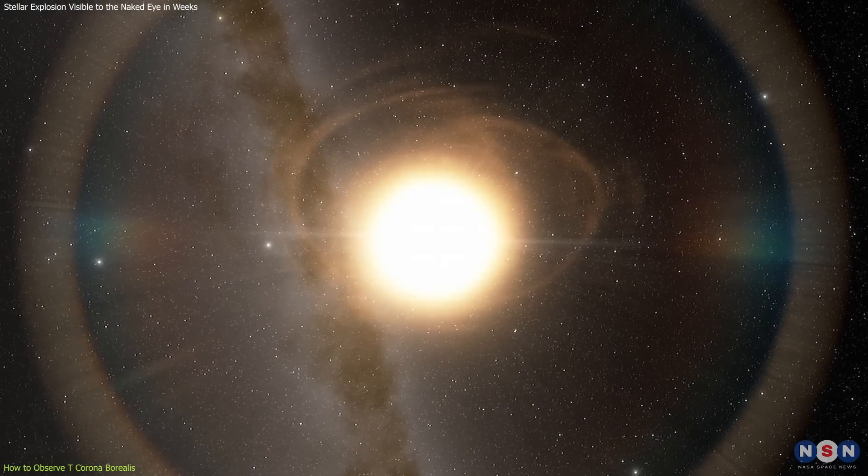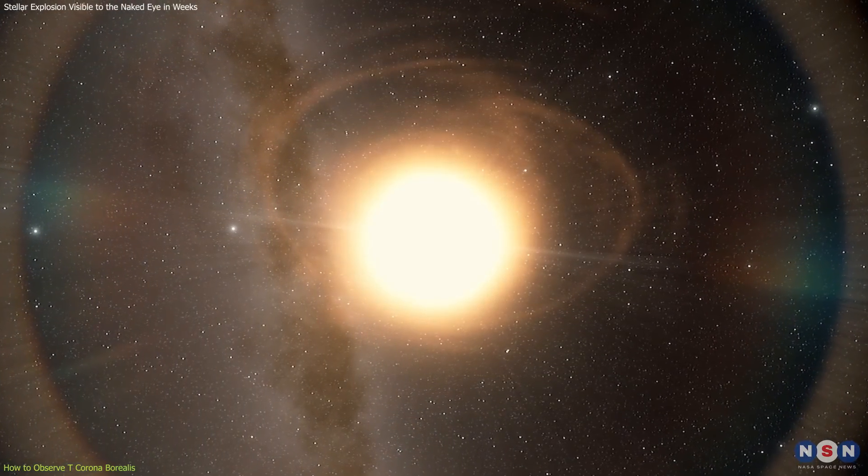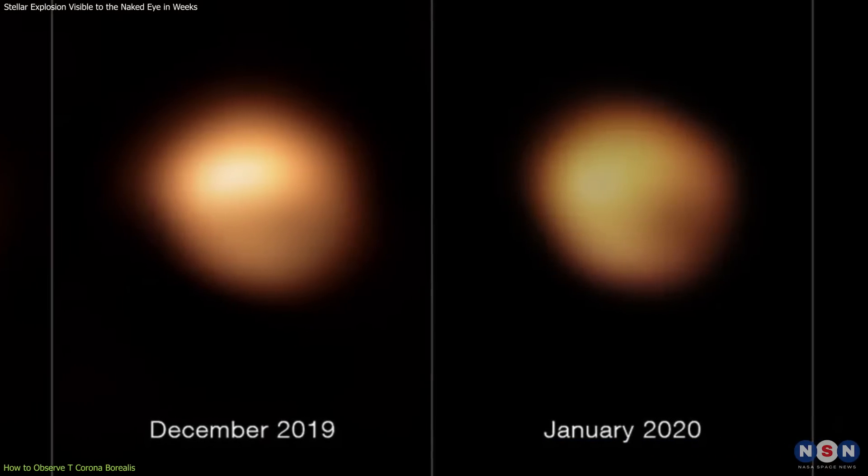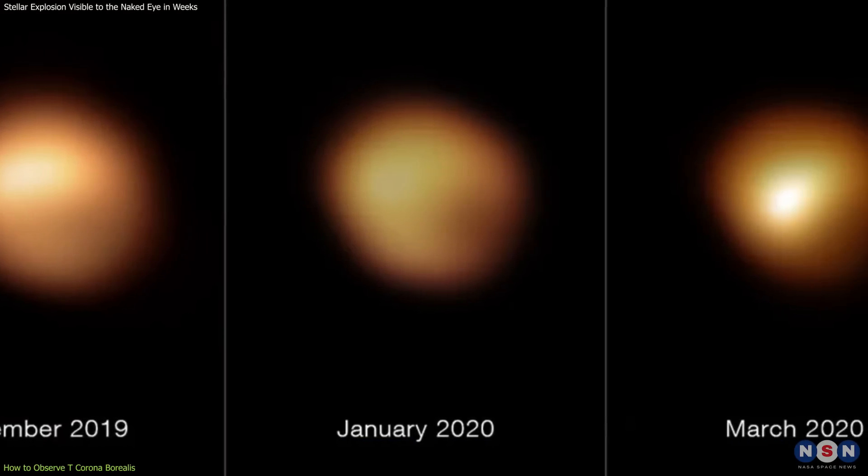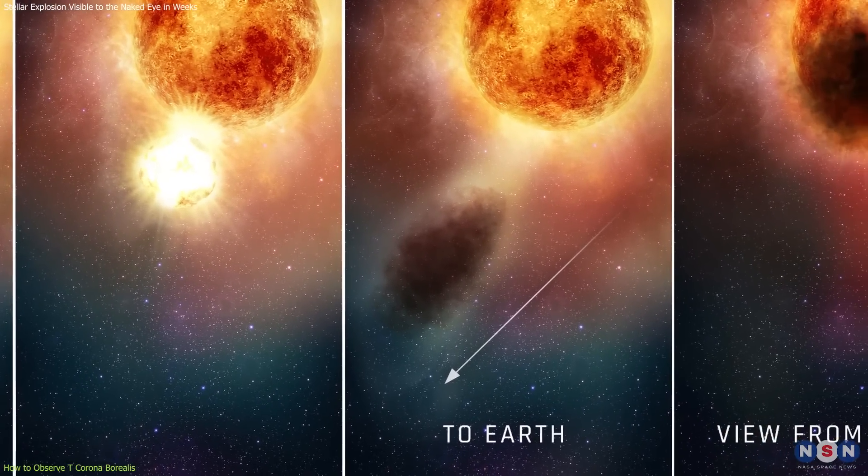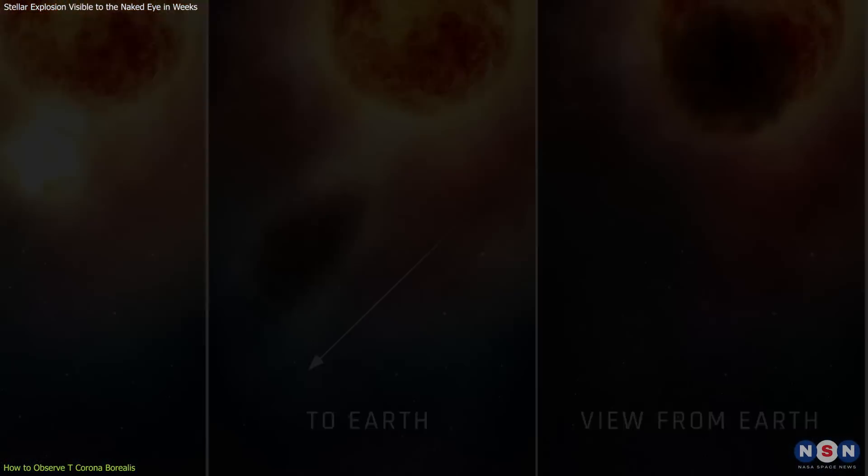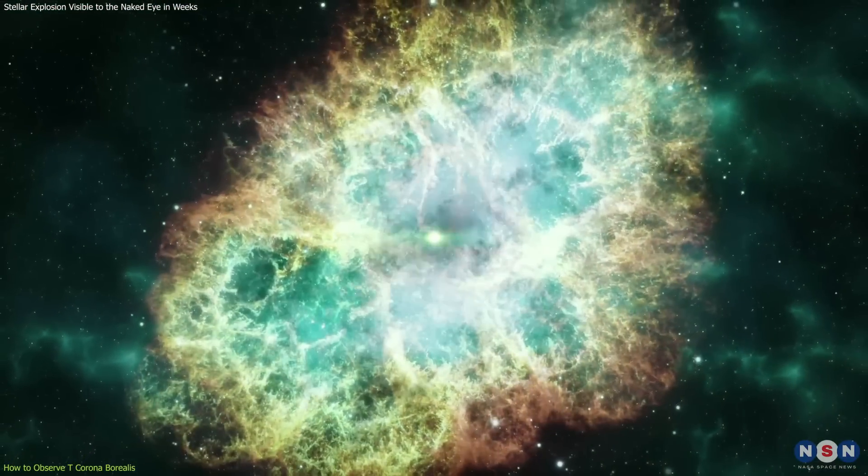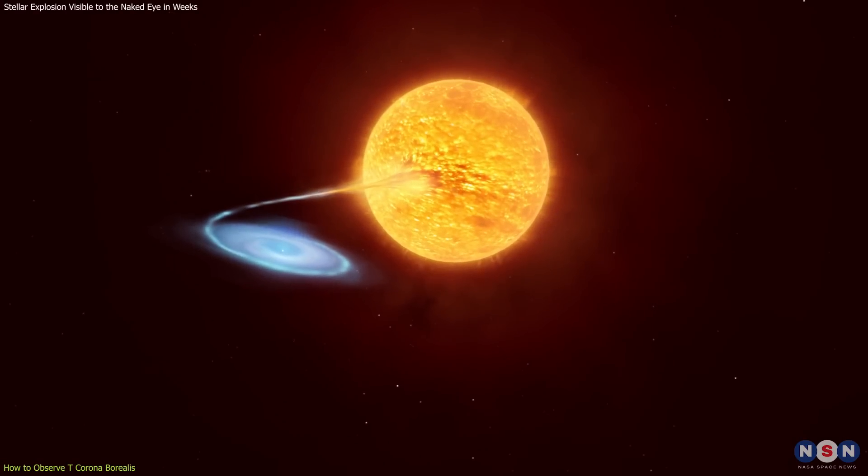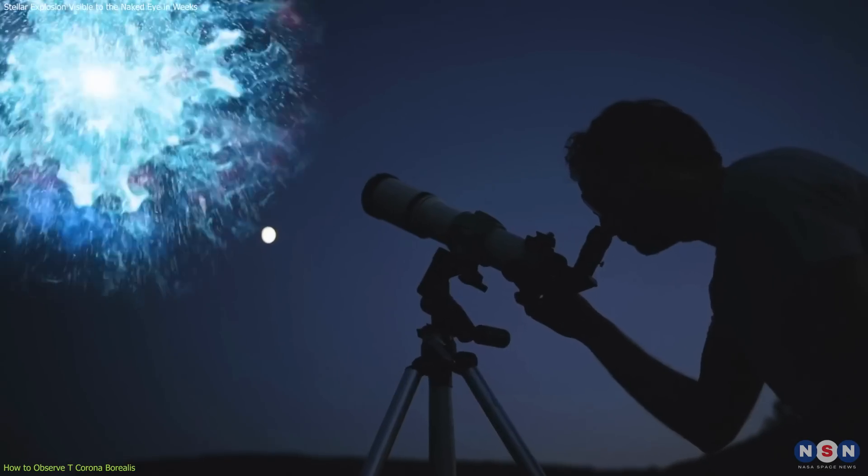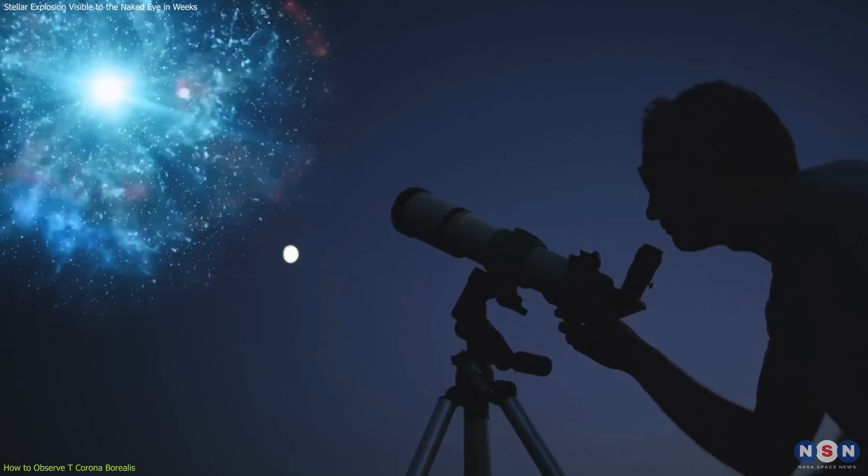Betelgeuse's brightness fluctuations have led to speculation about an imminent supernova, especially during its notable dimming in late 2019 and early 2020. However, this dimming was later attributed to a dust cloud partially obscuring the star, rather than an indication of an imminent explosion. In contrast, TCRB's outbursts are driven by the predictable accretion process of its binary system, making it a more reliable candidate for observation in the near term.